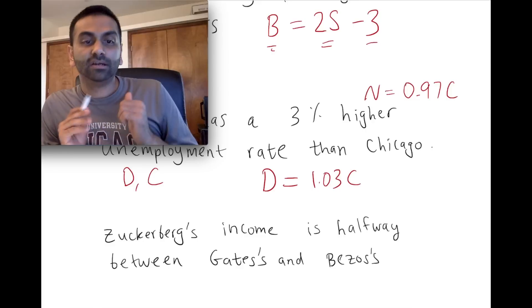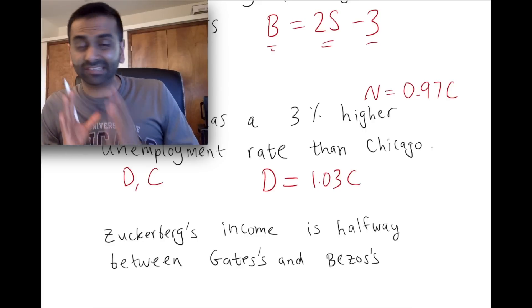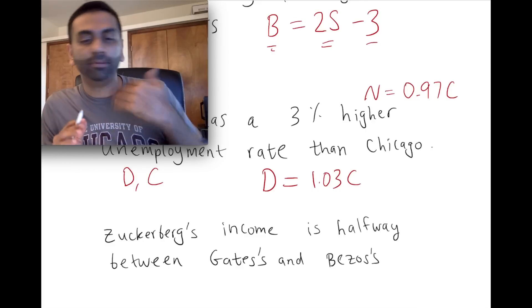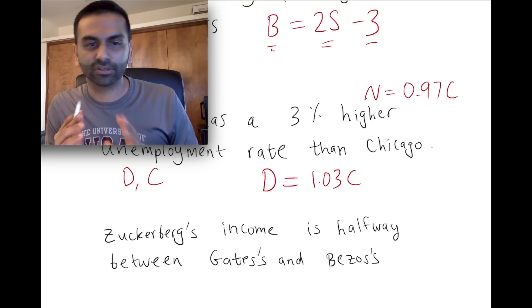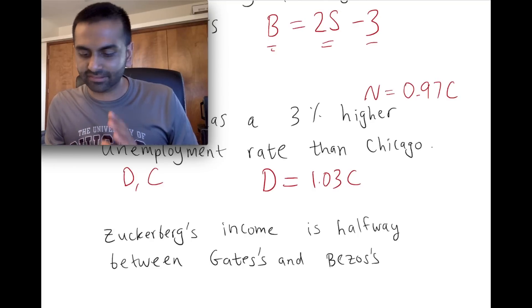that a sentence in English says Mark Zuckerberg's income is halfway between Bill Gates and Jeff Bezos. How do you translate that sentence into math? Well, again, we're going to label these things z, g, b, or whatever, and we're